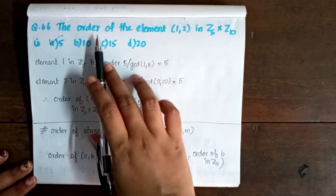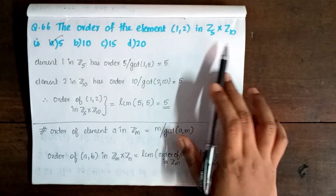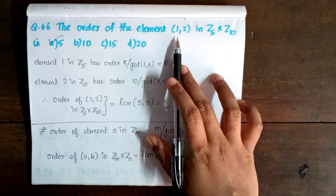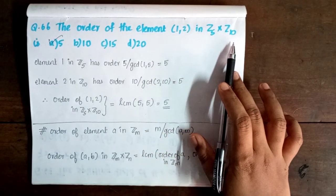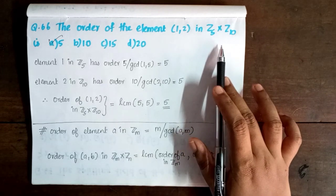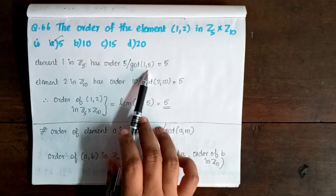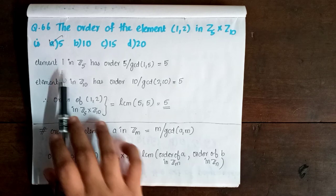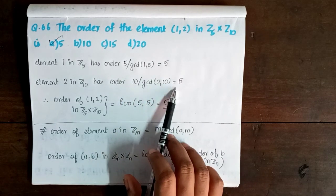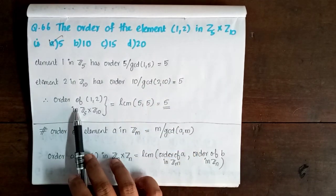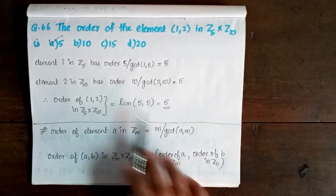Next, question 66: The order of the element (1, 2) in Z5 cross Z10. The order of (1, 2) in Z5 × Z10 is LCM of order of 1 in Z5 and order of 2 in Z10. Order of 1 in Z5 equals 5 divided by GCD(1,5) equals 5. Order of 2 in Z10 equals 10 divided by GCD(2,10) equals 5. Therefore order of (1,2) in Z5 × Z10 equals LCM of 5 and 5, which equals 5. So option A is correct.